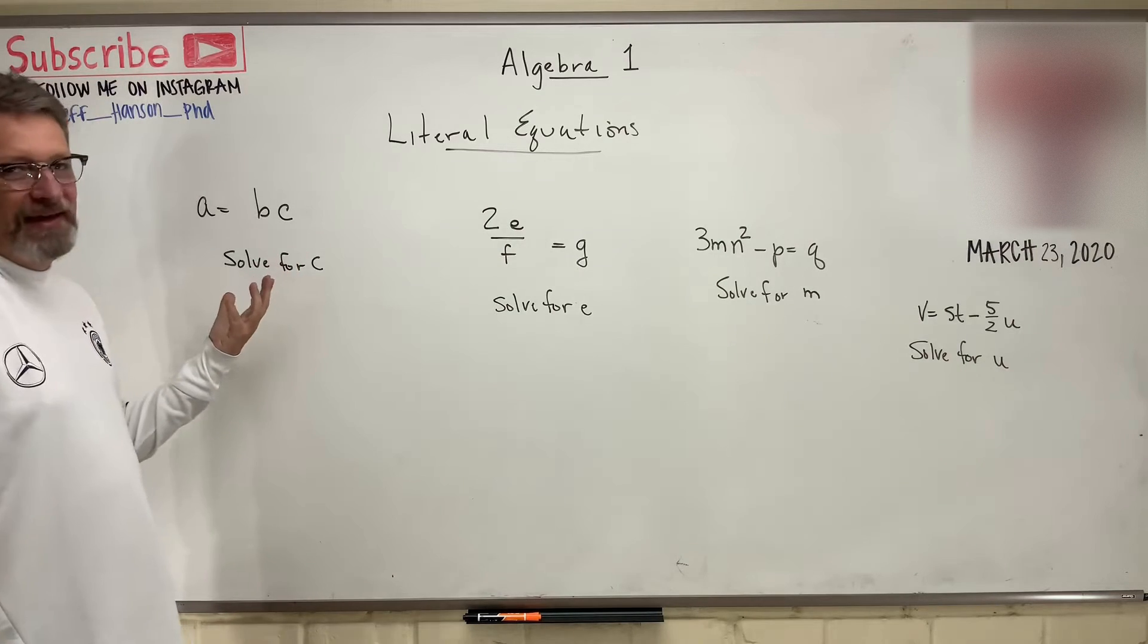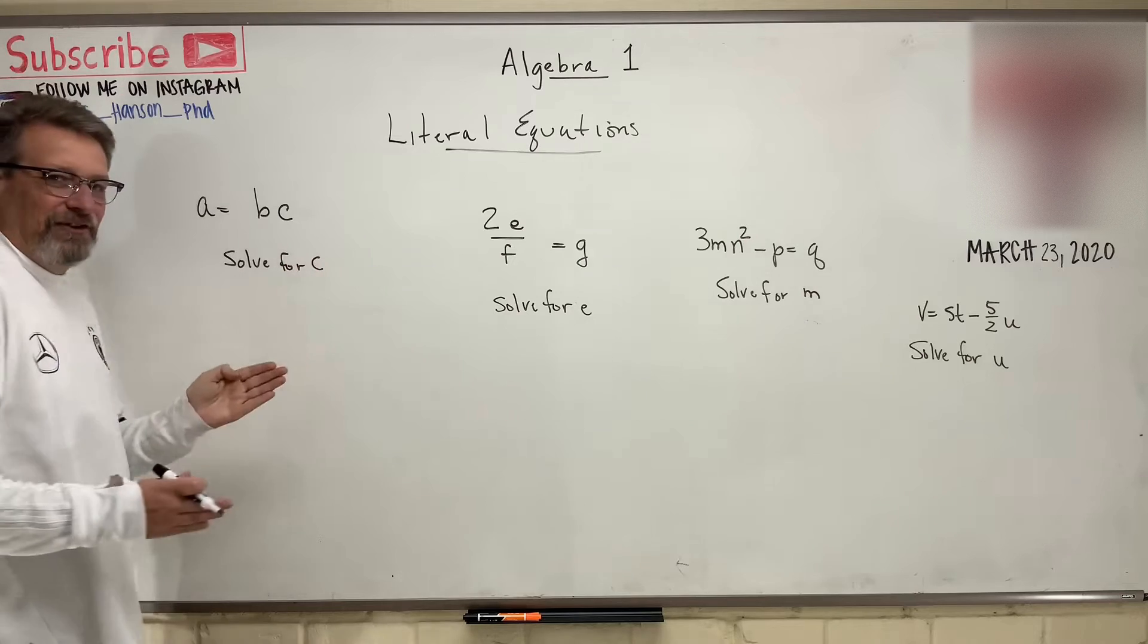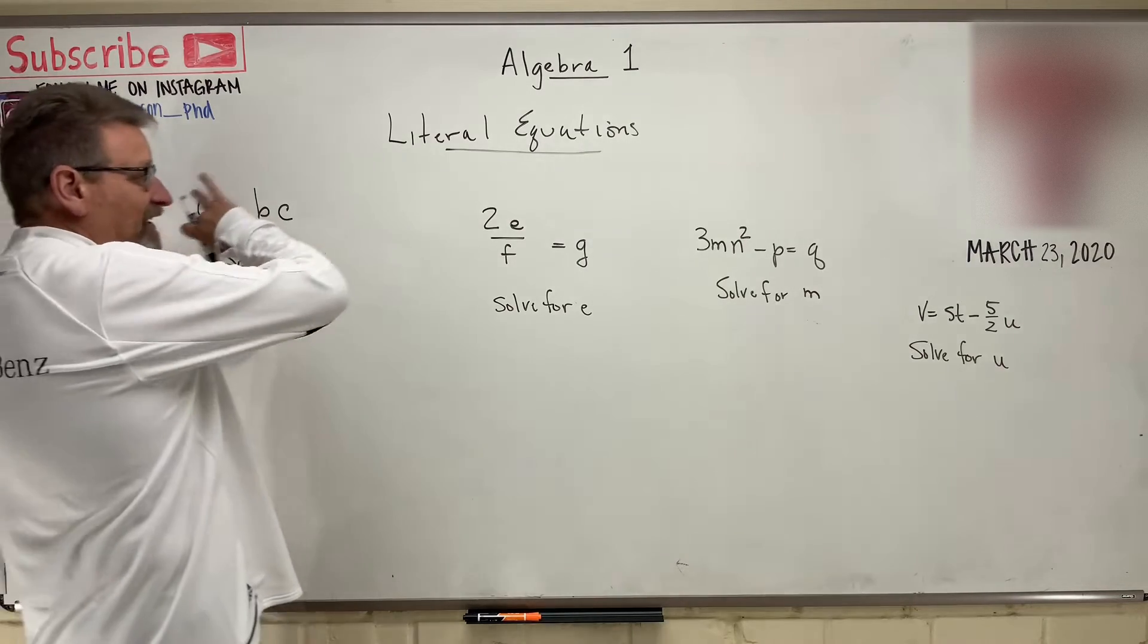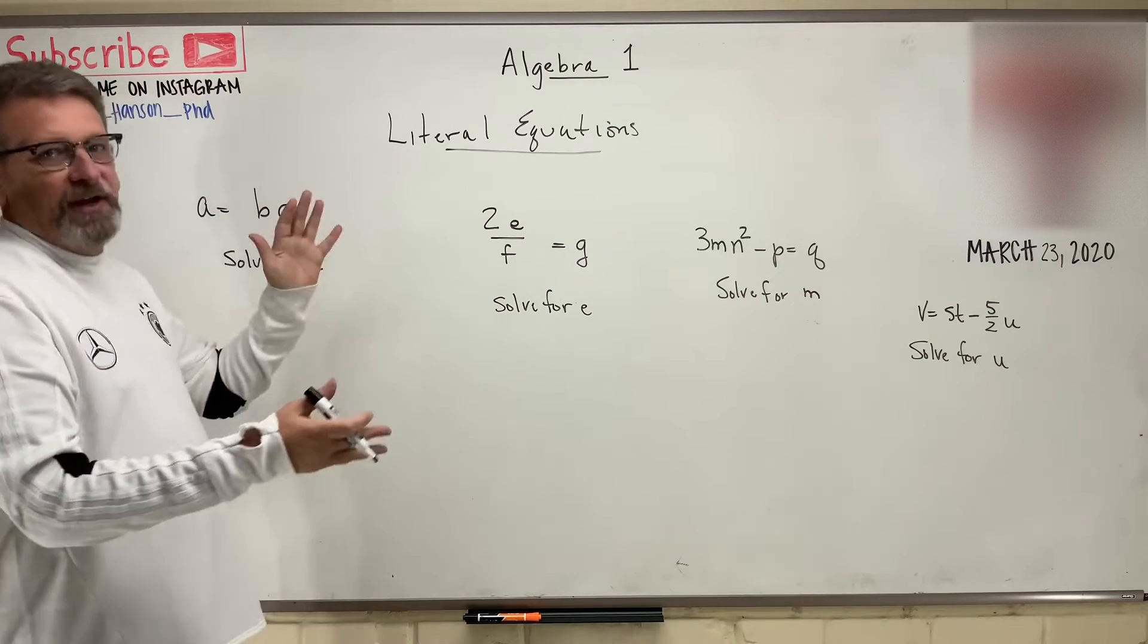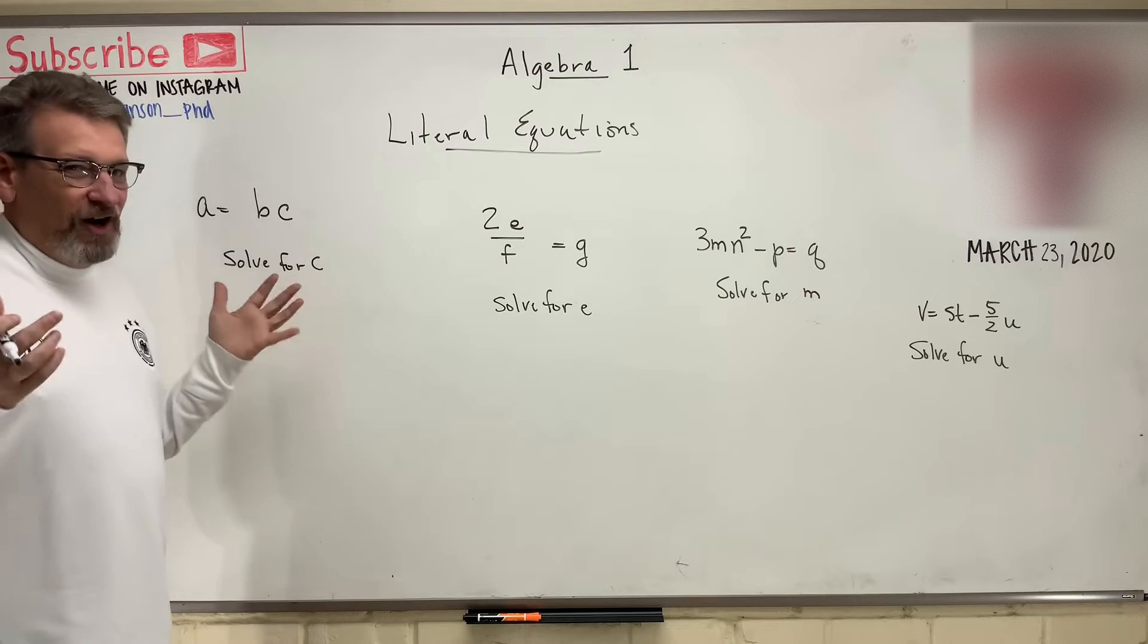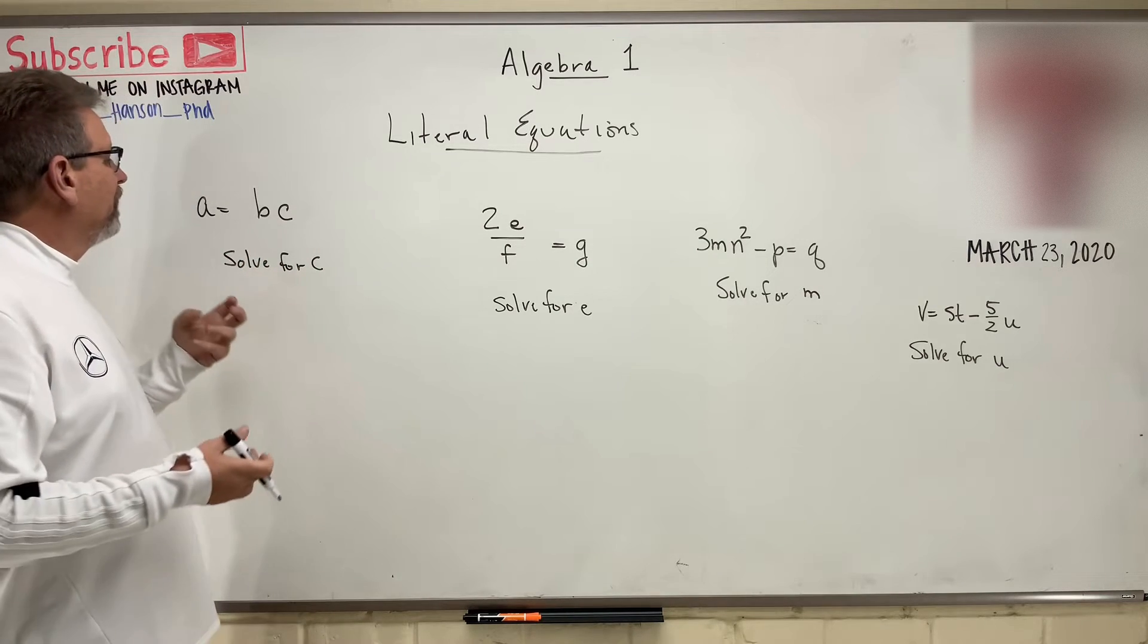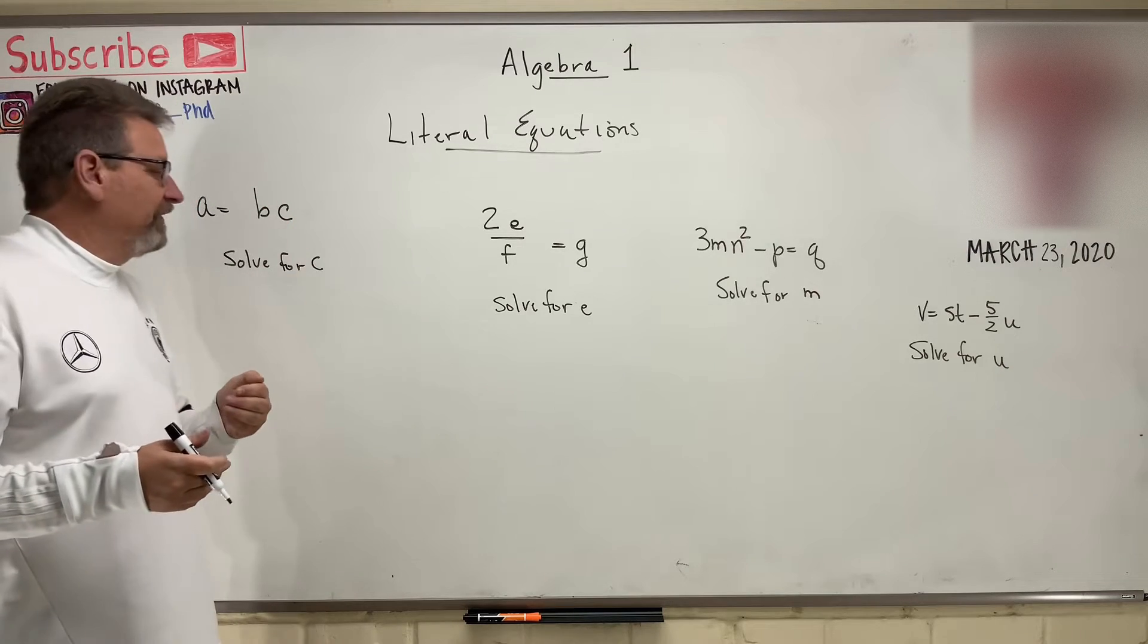Solve for C. Solve for E. What does that mean? All that means is get that variable that they're asking us to solve for all by himself, right? We want to get everything else on the other side of the equation where we have C equals something else, okay? Now, it doesn't always have to equal a number. It can equal an expression or it can equal something in terms of two other variables. And that's what we're going to do here.